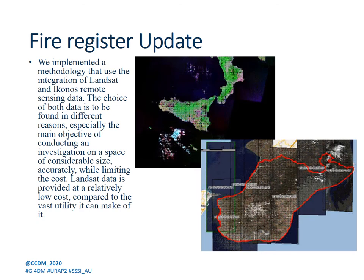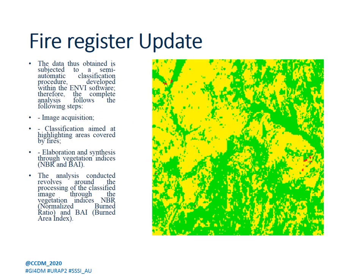We implemented a methodology that used the integration of Landsat and IKONOS remote sensing data. The choice of both data sources is driven by different reasons, especially the main objective of conducting an investigation over a considerable area accurately while limiting cost. Landsat data is provided at a relatively low cost compared to the utility it provides. The data obtained is subjected to a semi-automatic classification procedure developed within the eCognition software.